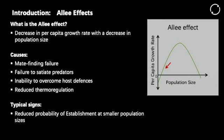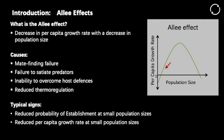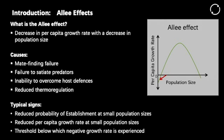When we study our populations, what are some of the typical signatures of the Allee effect being present? One is reduced probability of establishment at small population sizes — when we do small releases, they don't establish. There's also reduced per capita growth rate at those small population sizes. And sometimes there's a threshold below which there is a negative growth rate, and eventually those populations will simply die off.